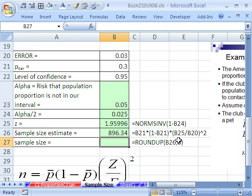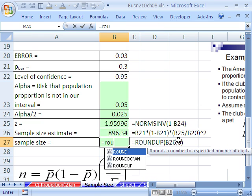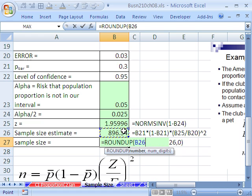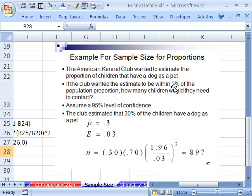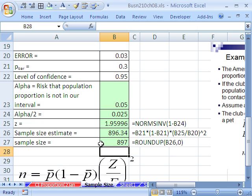Now that's our estimated sample size. Let's go ahead and round up. ROUNDUP, comma 0, close parentheses. And there it is, our estimate for sample size to go out and make an estimate of proportion of children that have a dog as a pet. That is our n for a proportion.